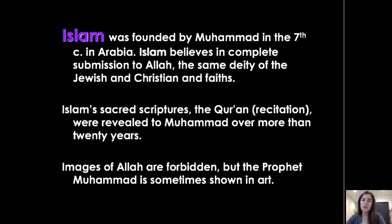Some quick background on Islam — we've been going through different religions in Asia, looking at things like Shinto, Buddhism, and Hinduism, and now we're moving on to Islam. Islam was founded by Muhammad the prophet in the seventh century in Arabia. The most sacred cities today are in Saudi Arabia, cities like Mecca and Medina. Islam believes in complete submission to Allah, the same single deity of Jewish and Christian faiths.